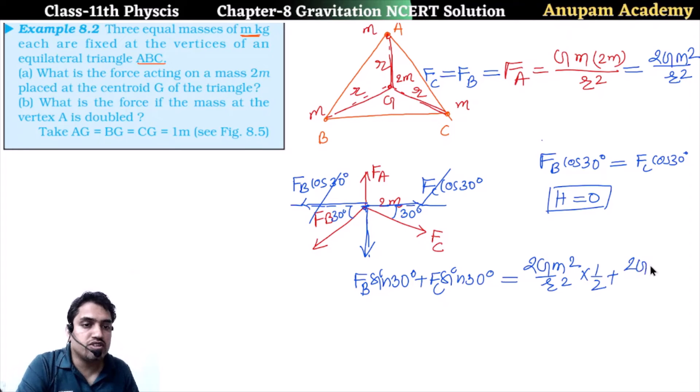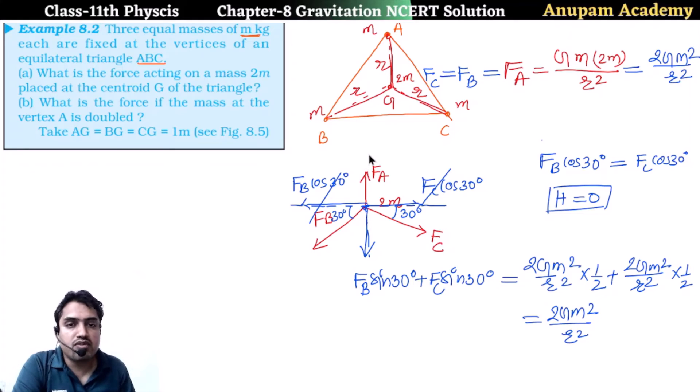Again this 2Gm² divided by R² and sin 30 again 1/2, so ultimately 2Gm² by R², or vertical upward which is equal to F_A. So the vertical component also equals 0, so the net force, the resultant force on 2M is equal to 0.